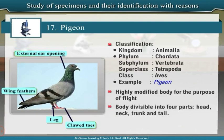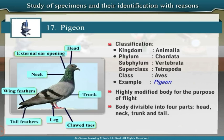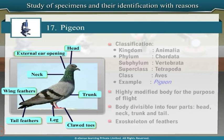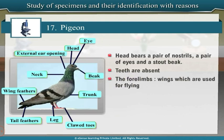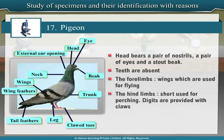The body of a pigeon is divisible into four parts: head, neck, trunk and tail. The body is covered with an exoskeleton of feathers. The head bears a pair of nostrils, a pair of eyes and a stout beak. Teeth are absent. The forelimbs are modified into wings which are used for flying. The hind limbs are short and used for perching. Digits are provided with claws. Pigeon is commonly seen in urban areas.